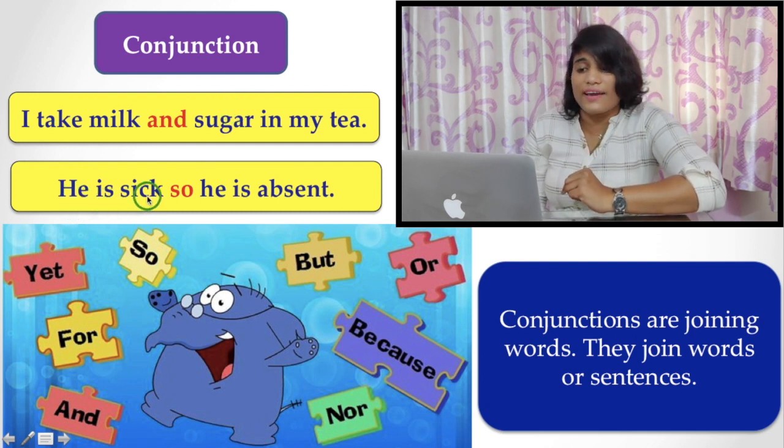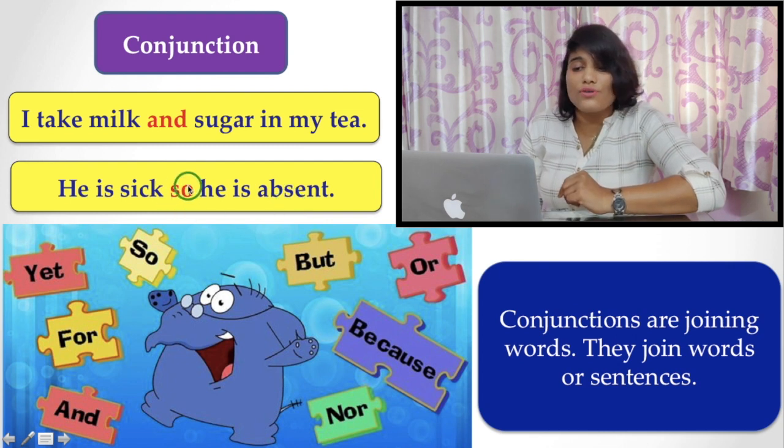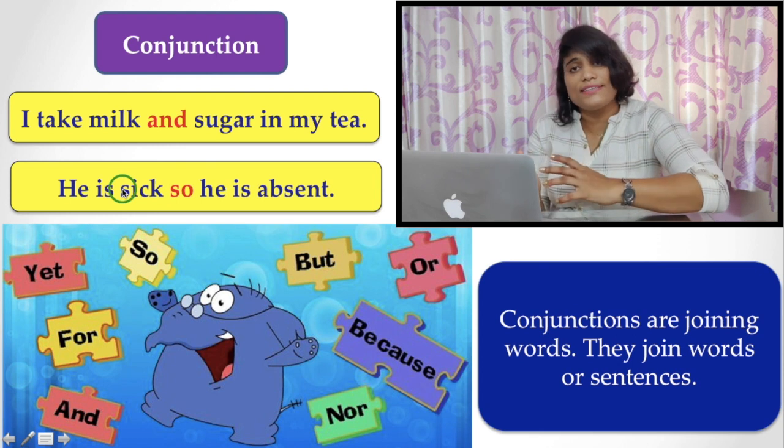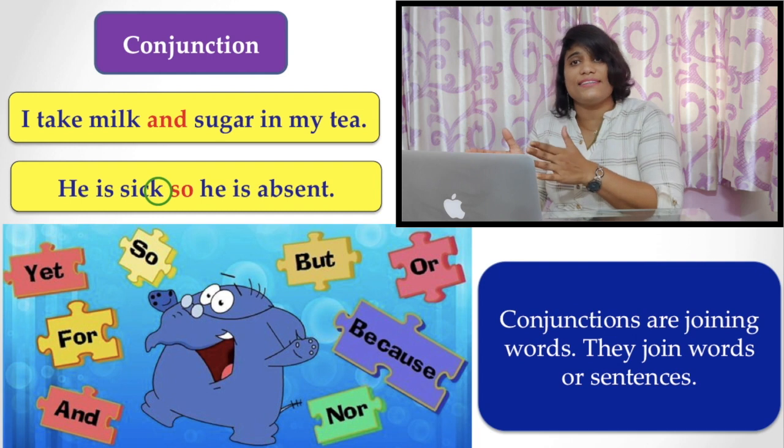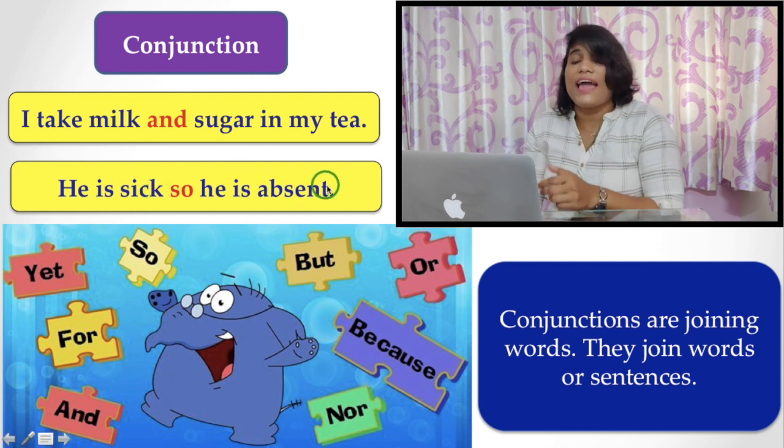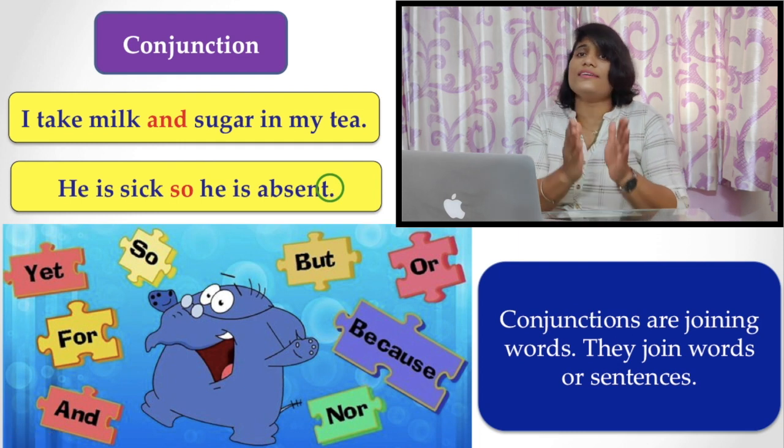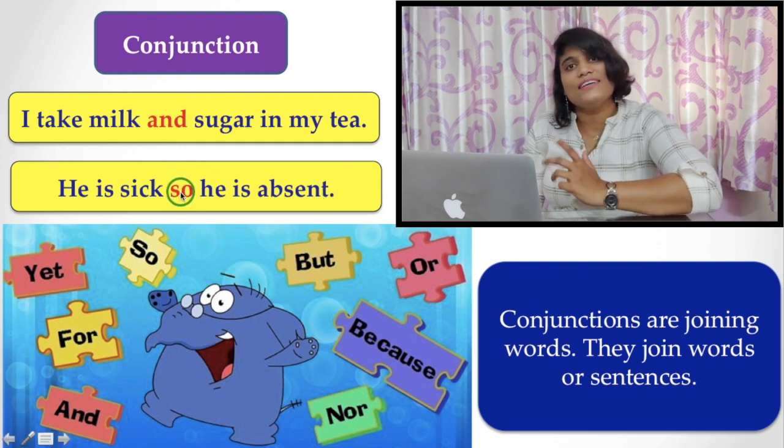Let's see more examples. He is sick, so he is absent. Here, the word 'so' also joins two sentences. That is, 'he is sick' - this is a separate sentence - and another sentence is that he is absent. These two sentences are joined together with the help of the word or conjunction, that is 'so'.